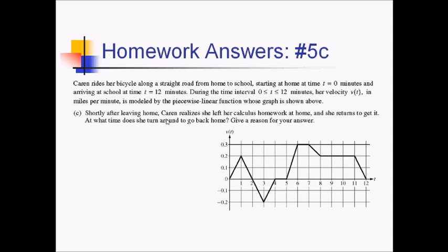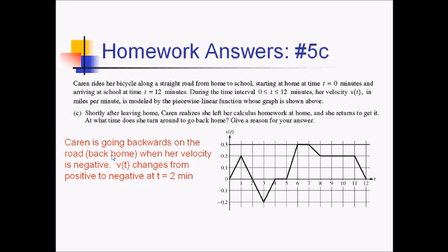For part C, Karen realizes she left her calculus homework at home and returns to get it. We need to find when she turns around. The sign of the velocity tells us her direction: positive means heading toward school, negative means heading back home. When the velocity changes from positive to negative — at t equals two minutes — that is when Karen turns around.